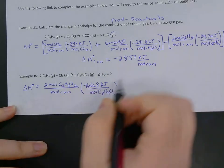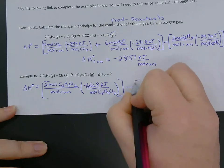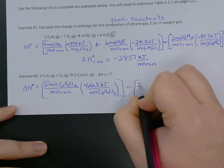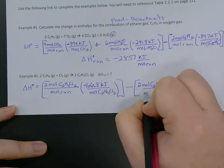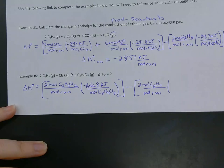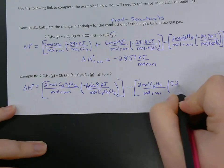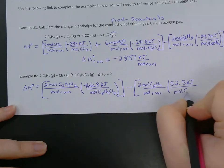That is our only product minus our reactants. So two moles C2H4 per mole reaction times its value is 52.5 kilojoules per mole of C2H4.